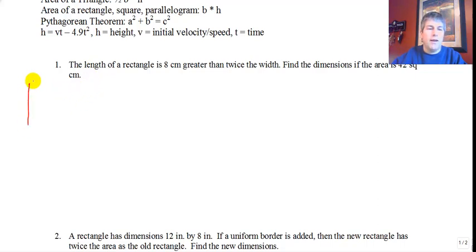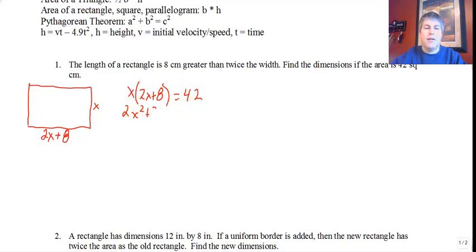So we're working with a rectangle, so I'm going to begin by drawing a rectangle. The length is 8 centimeters greater than twice the width. So let's make our width x and our length 8 centimeters greater than twice the width. So twice the width is 2x, and 8 more than that, so 2x plus 8. So our dimensions of our rectangle x and 2x plus 8. Our area is 42, so we can take x times 2x plus 8 and set that equal to 42.